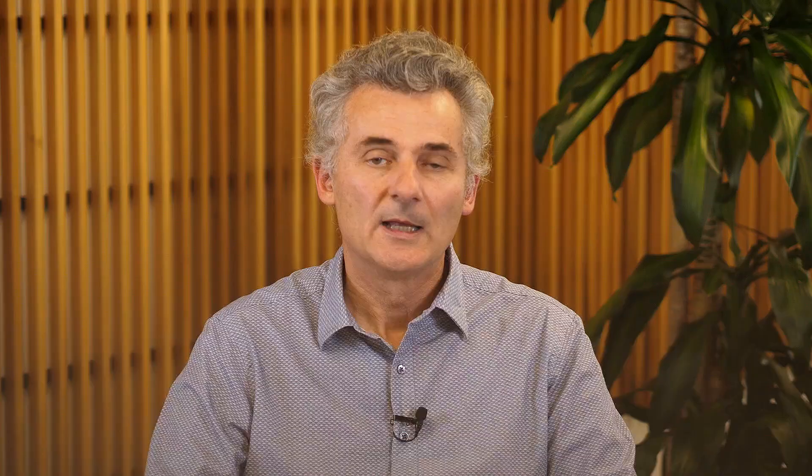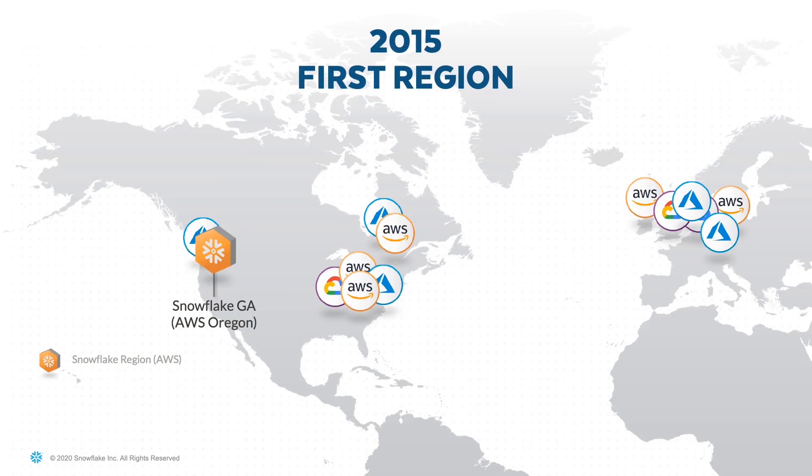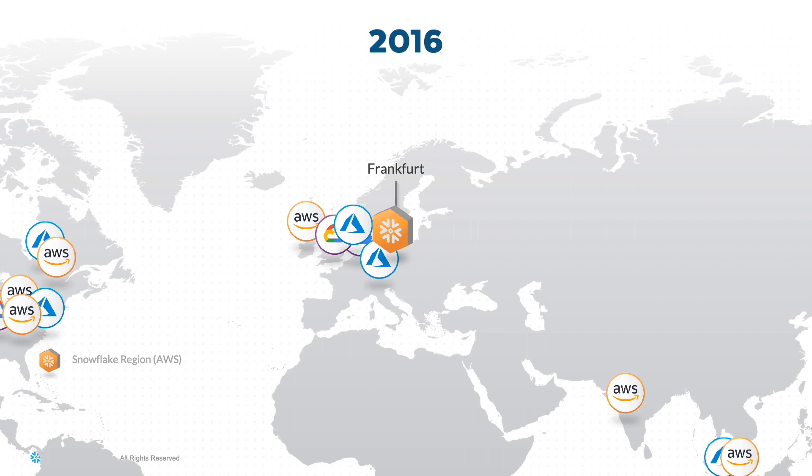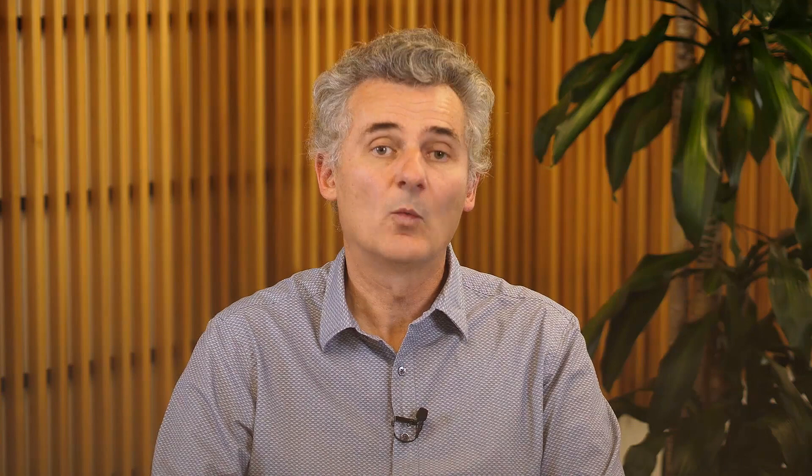In 2016, we launched Snowflake in Europe by adding a new AWS Frankfurt region. In 2017, we expanded our presence in the US by adding another Snowflake region in Virginia. 2018 was another big milestone, because Snowflake became multi-cloud with the introduction of two Azure regions — one in Virginia and the other in Amsterdam, Europe. We also added two new AWS regions that year, one in Dublin, Europe, and the other in Sydney, Australia.